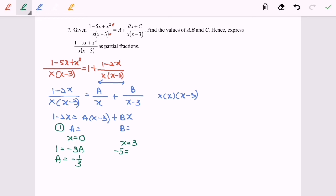And if the value is 3, my answer will be 3B and B will be equals to negative 5 over 3.